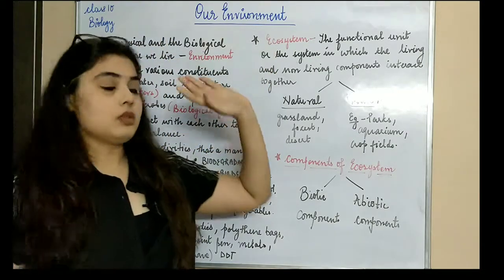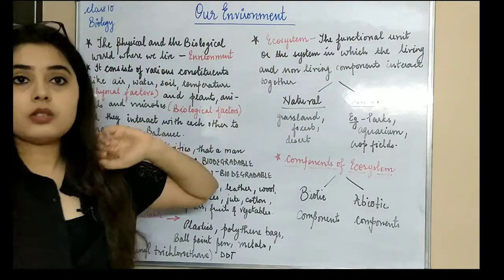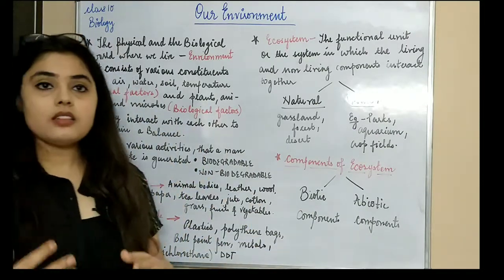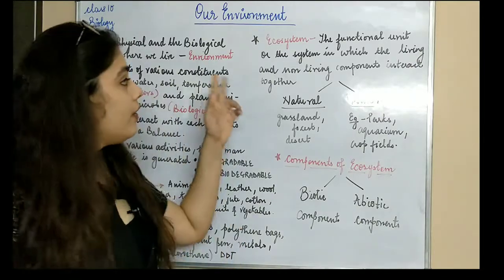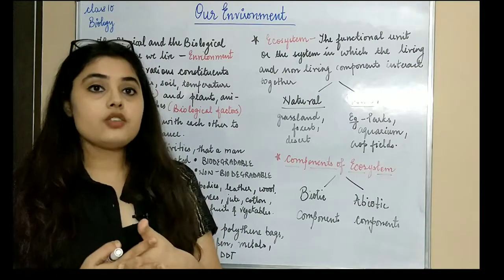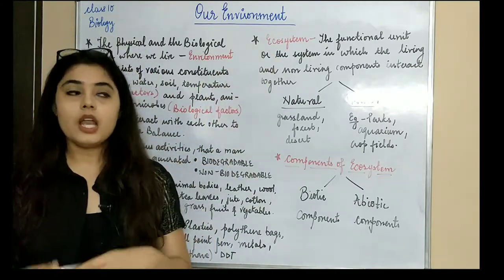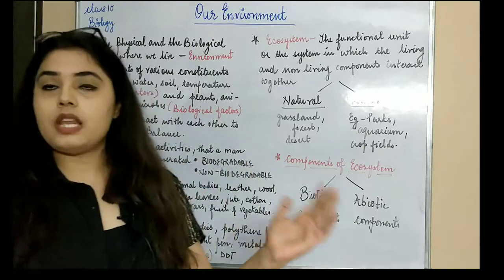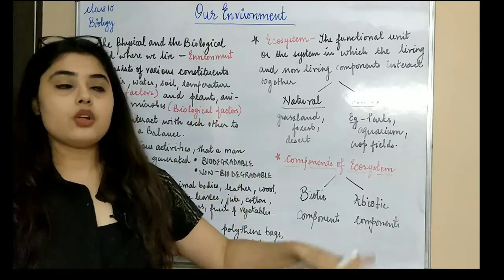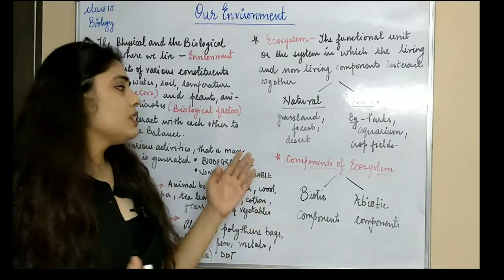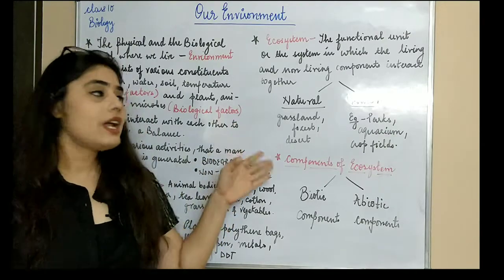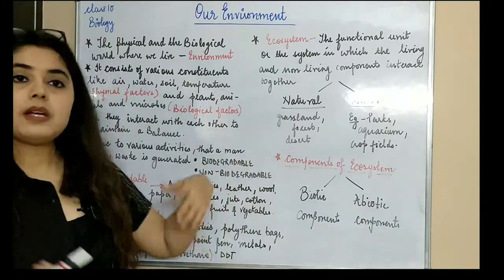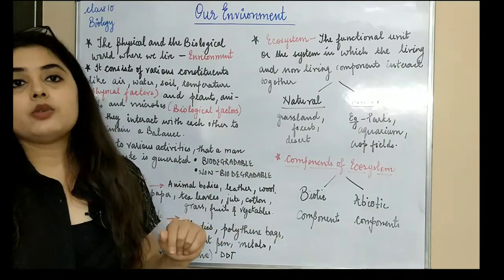Now we are moving to ecosystem. An ecosystem is a functional unit or system in which all the living and non-living components interact with each other. The living components interact with the non-living components, and together they form an ecosystem. Ecosystem can be natural — for example, terrestrial ecosystem, aquatic ecosystem, grassland, desert, and forest ecosystems — these are all naturally present in nature.